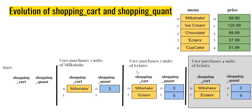What we really need to do here is that we do not need to change anything in the shopping cart itself. However, we do need to update the shopping quantity — shopping_quant — because these two lists are in perfect sync. When user wants three units of milkshake we have milkshake and three; when user wants four more units of eclairs, we go from eclairs and five to eclairs and nine. So I will have to use the shopping cart list to figure out which index of shopping_quant to change, and then change the corresponding index.